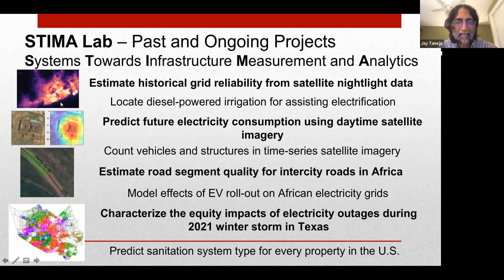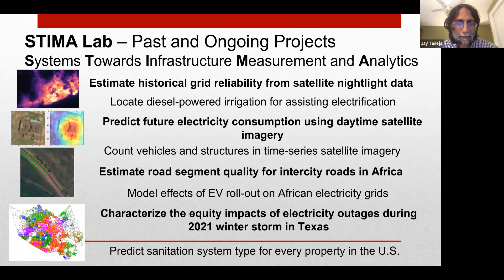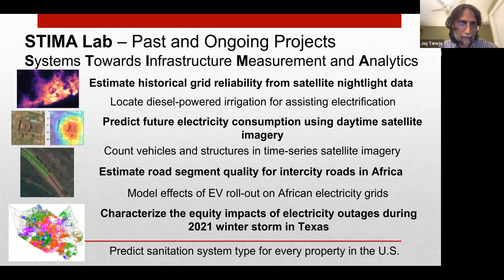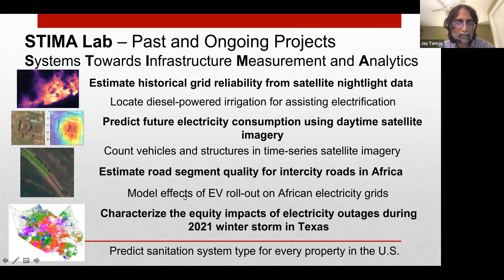A couple of examples: measuring grid reliability by measuring small changes in the nighttime illumination of lighting, looking at the quality of roadways by doing a deep look at individual patches of roadway and providing some indication of the bumpiness of roads connecting towns or villages or cities. We also do some modeling and projection, thinking about what future energy transition aspects like the growth in electric vehicles or systems like cooking and cooling are going to do to electricity grids that are already fairly constrained in their operations.